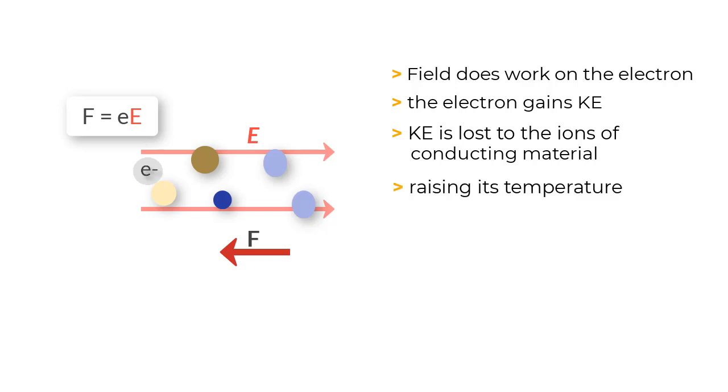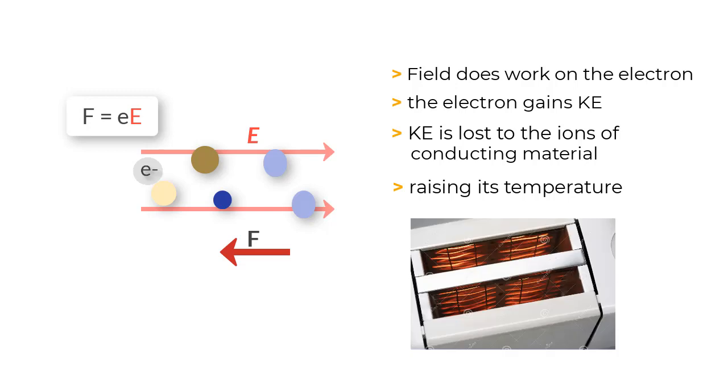You might think this as a waste of energy, but it depends on the application of the electric current. If you are using this current to heat up your toaster, these collisions actually result in heating up the element of your toaster. Any which way, this collision of electrons with the ions of the conducting material is something unavoidable when current is generated.